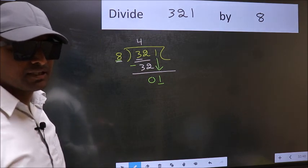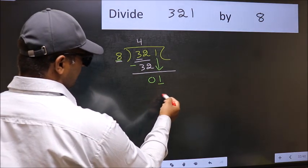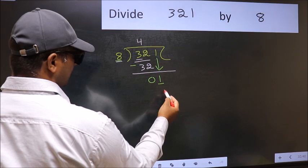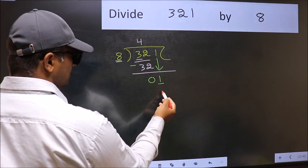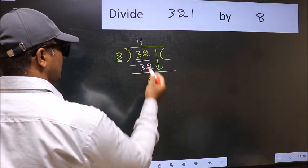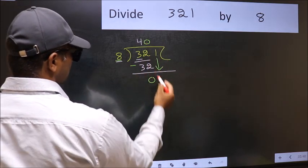Instead, what you should think of doing is, which number should we take here? If I take 1, we will get 8. But 8 is larger than 1. So what we should do is, we should take 0. So 8 into 0.